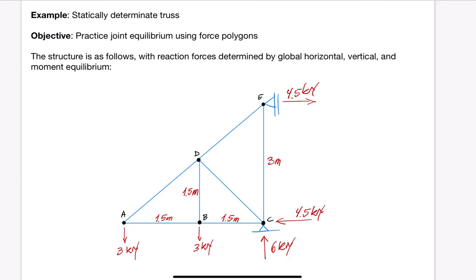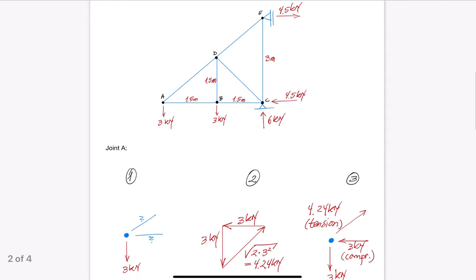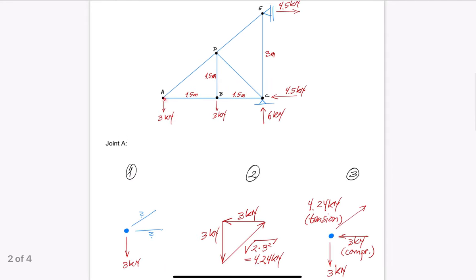Notice that we have started by determining the reaction forces by global equilibrium of the truss. That is always a good idea. Next, we address joint A on the very left-hand side. It has a known force equal to 3 kN, which is an externally applied load on the truss, and it has two unknown member forces. With two or less unknown forces we can determine the unknowns by equilibrium.